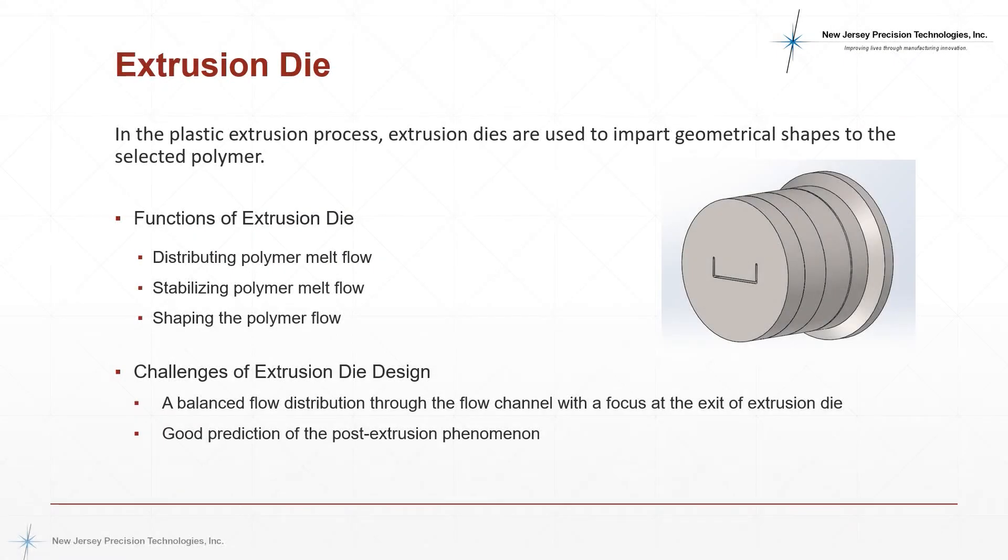The extrudate obtains its required geometrical shape with the help of extrusion dies. The dies are responsible for distributing the incoming polymer melt into a uniform flow as well as shaping the extrudate as it flows through the die, taking into consideration all post-extrusion effects that can adversely affect the final shape. Therefore, they have to be carefully designed and manufactured, which is usually a cumbersome approach involving trial and error. However, the engineers at New Jersey Precision Technologies have amassed enough experience and with their access to professional tools, near-perfect extrusion dies can be designed and manufactured.